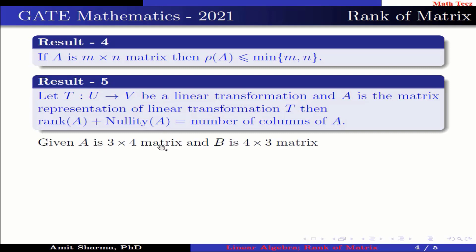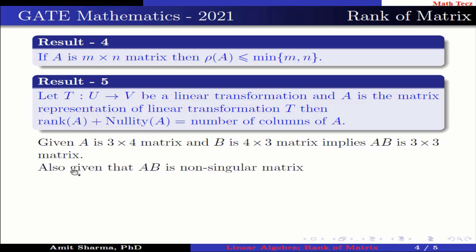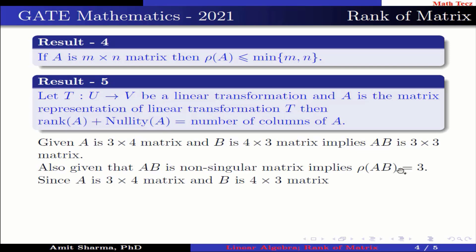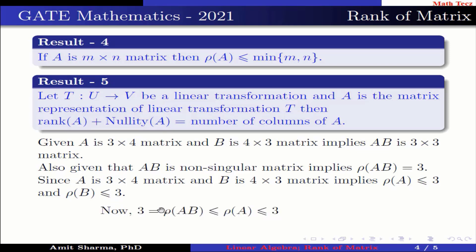Given A is a 3×4 matrix and B is a 4×3 matrix, this implies AB is a 3×3 matrix. Also, given that AB is non-singular, this implies rank of AB equals 3. Since A is 3×4 and B is 4×3, rank of A is less than or equal to 3. Since rank of AB equals 3 and rank of AB ≤ rank of A, this implies rank of A equals 3.